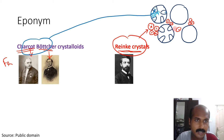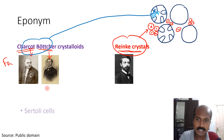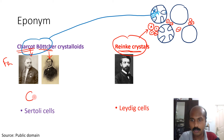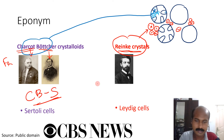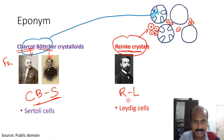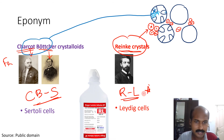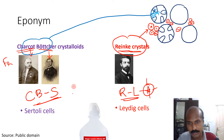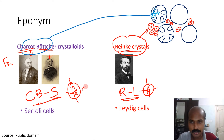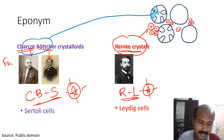You can remember these with mnemonics: Charcot-Böttcher found in Sertoli cells — remember it as CBS; Reinke crystals found in Leydig cells — remember as RLS (Ringer Lactate Solution). These mnemonics may help you remember that Charcot-Böttcher is in Sertoli and Reinke is in Leydig cells.